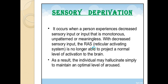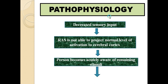Whenever there is a decrease in sensory input, the RAS cannot project a normal level of activation to the brain, but the brain tries to maintain arousal through hallucination — auditory or visual. The key point about hallucination is that no external stimulus is required, yet the person still perceives.